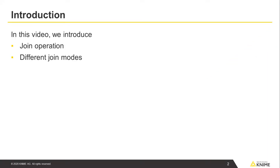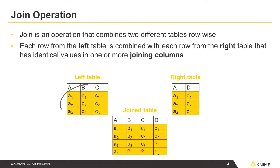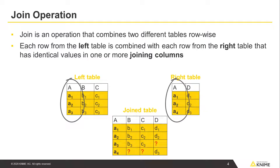In this video we introduce the join operation and the different join modes. The join is an operation that combines two different tables row-wise. Each row from the left table is combined with each row from the right table that has identical values in one or more selected joining columns.